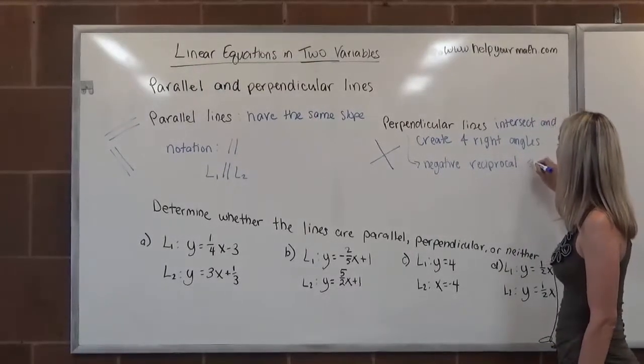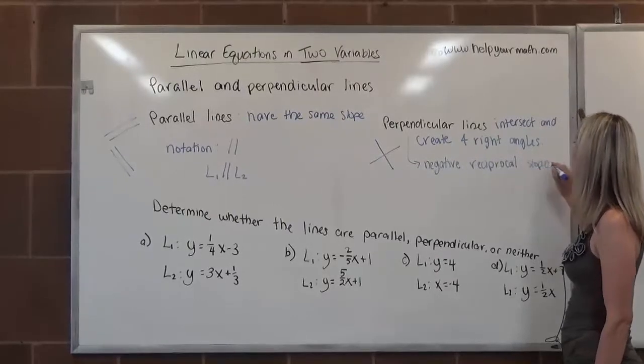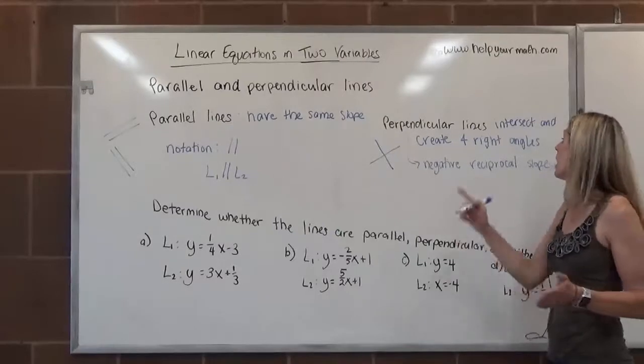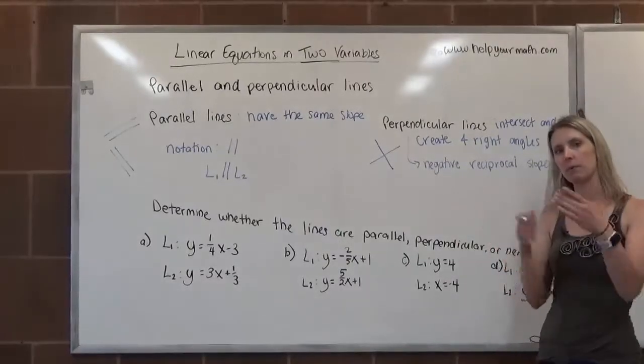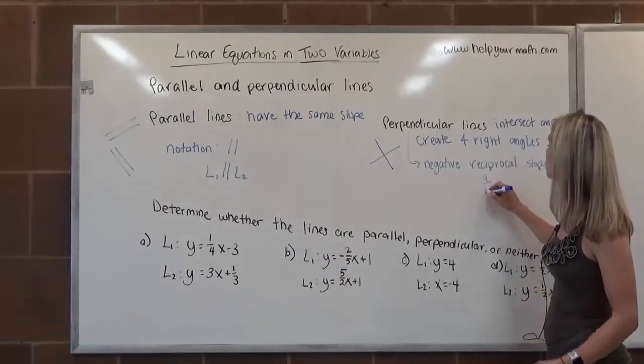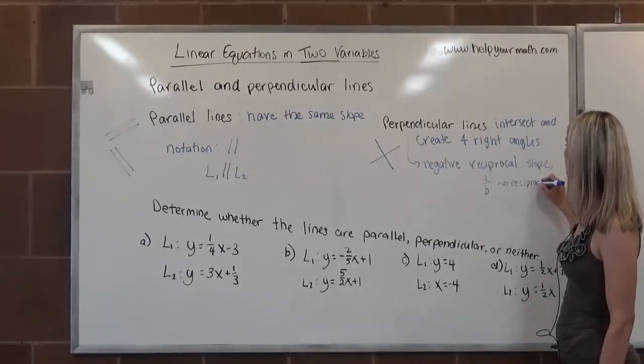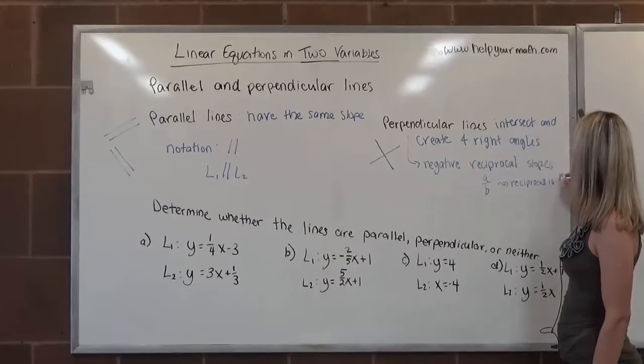Negative reciprocal slopes. So their slopes are negative reciprocals. Negative means that one's positive and one's negative. And reciprocals means that, so reciprocals, if I have A over B, the reciprocal of A over B is B over A.